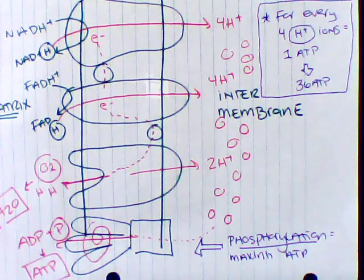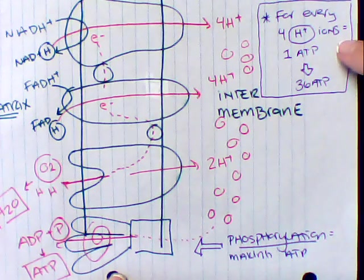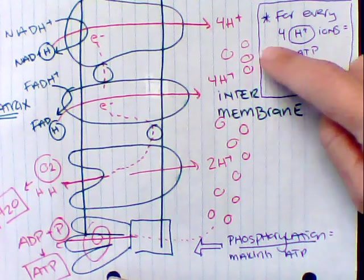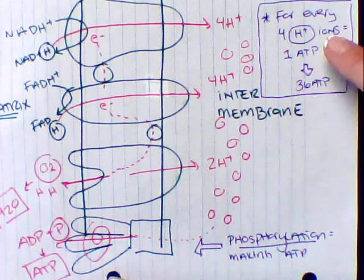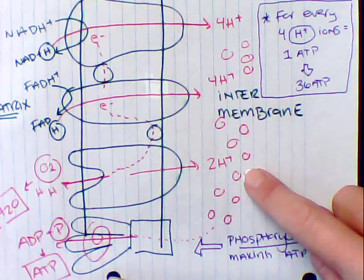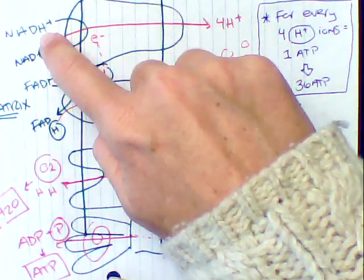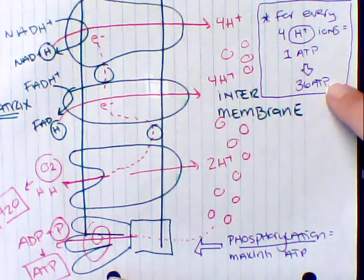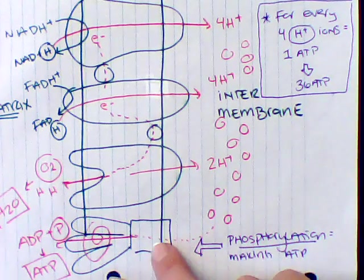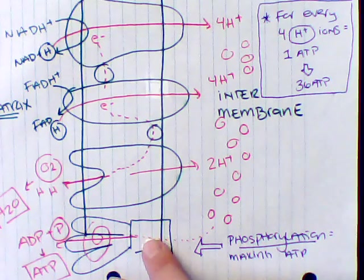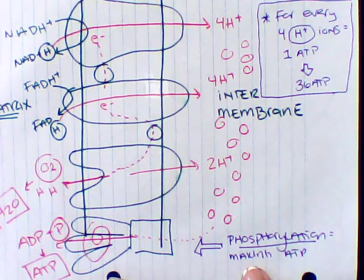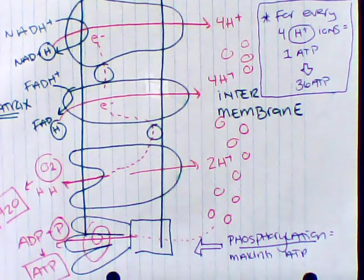And just for some extra information here, for every four hydrogen ions that get shipped over to this side, we end up making one ATP. Well there's so many hydrogen ions that get shipped over because of the production of our NAD and FAD during the Krebs cycle that we end up creating a byproduct of 36 ATP. The process of going through the ATP synthase here is known as phosphorylation, which is making ATP.